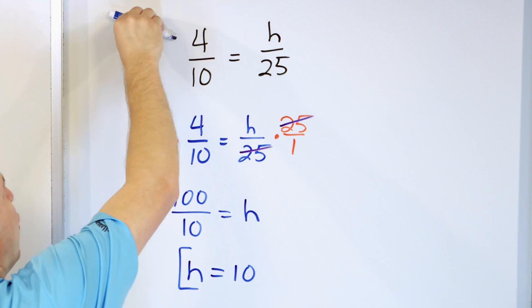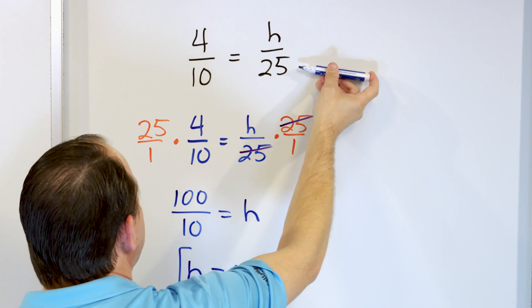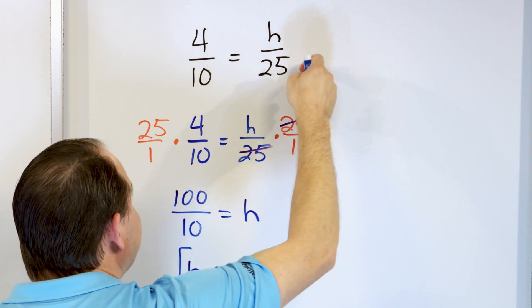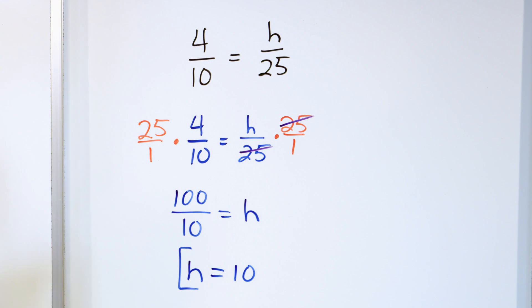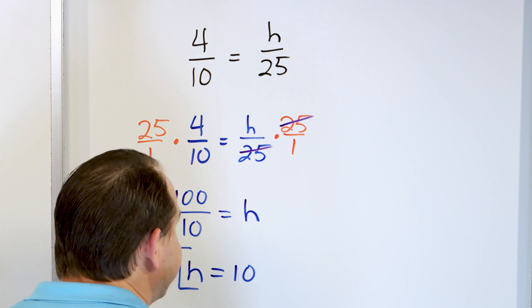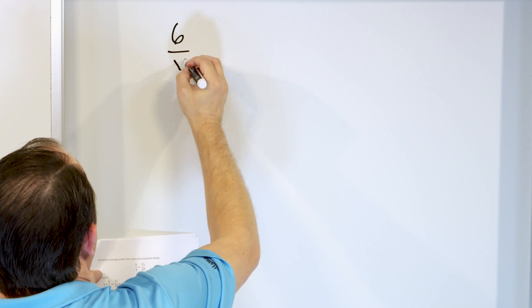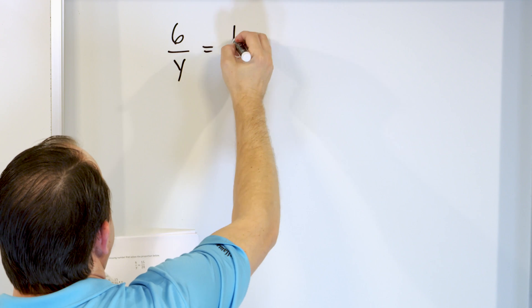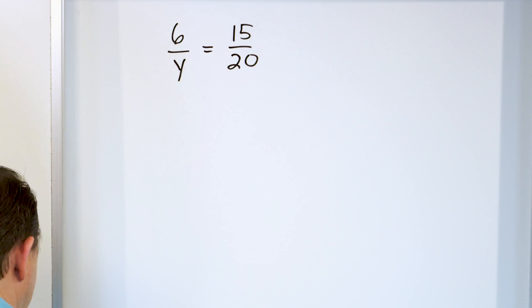So we're saying four as it compares to 10 is the same relationship as 10 as it compares to 25 — the ratio of 10 to 25 is the same as 4 to 10. As we solve these problems, I'm going to start doing that process of cancellation a bit more ahead of time. Let's say we have 6 divided by y is equal to 15 divided by 20. We want to solve this proportion for y.